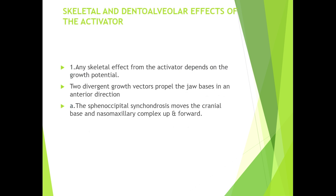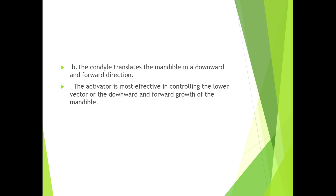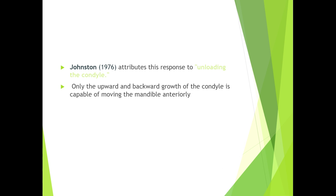Next, we will discuss the skeletal and dentoalveolar effects of the activator. Any skeletal effect depends on the growth potential. Two divergent growth vectors propel the jaw bases anteriorly: the sphenooccipital synchondrosis moves the cranial base and nasomaxillary complex up and forward, while the condyle translates the mandible in a downward and forward direction. The activator is most effective in controlling the lower vector — the downward and forward growth of the mandible. Johnston attributes this response to unloading the condyle. Only upward and backward growth of the condyle is capable of moving the mandible anteriorly.